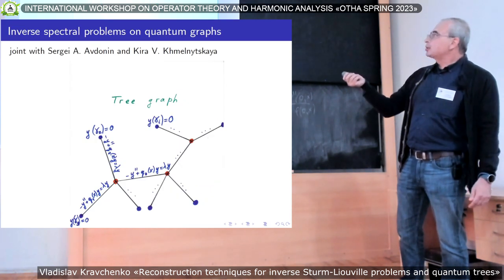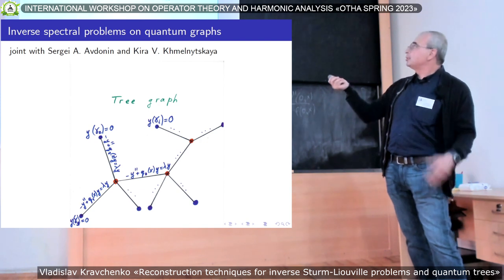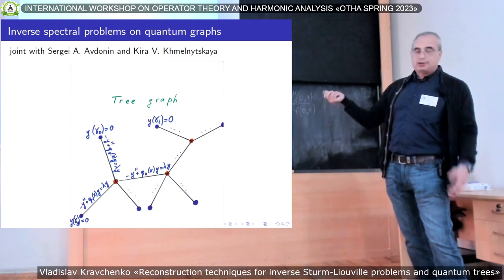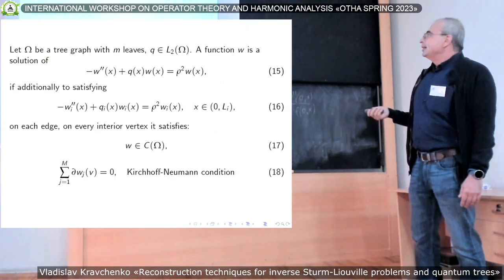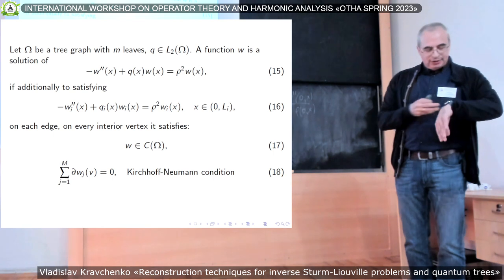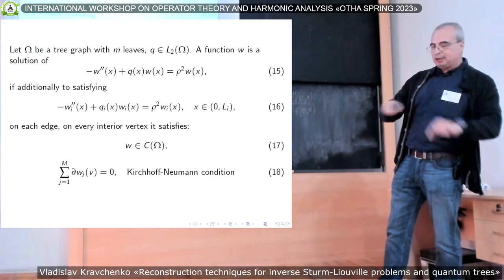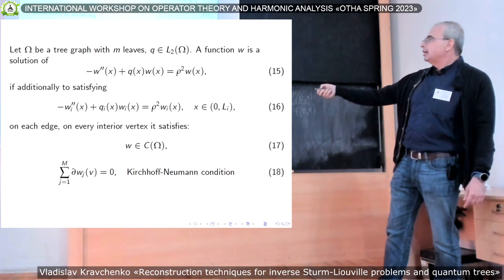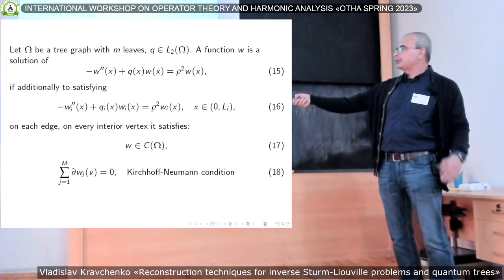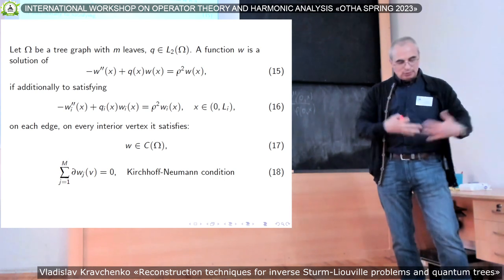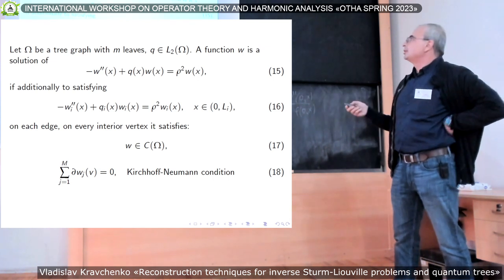Next, the application of this technique for solving inverse problems on quantum tree graphs — so far without cycles, though I believe it should also work with cycles. The compatibility conditions at interior vertices are the following: the solution should be continuous, and the Kirchhoff-Neumann condition holds, meaning the sum of all derivatives from all edges at a vertex equals zero. There can be other conditions, but this is the most natural one.